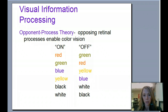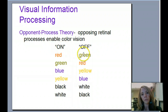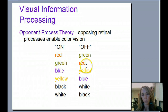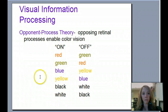The opponent processing theory says that if red is active in my retina — if I'm staring at something red — when it turns off, I'll see green, and vice versa. If I'm staring at something green, when I look away I'll see red. Blue and yellow go together the same way, and then black and white. So I still have these receptors — red, green, blue, yellow, black, white — but I get these afterimages afterwards.